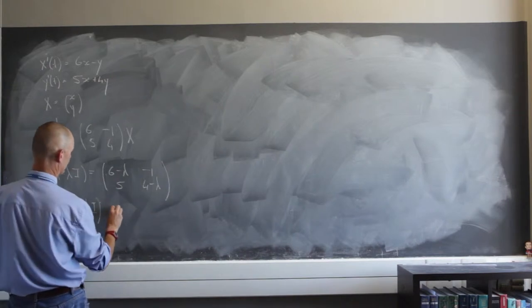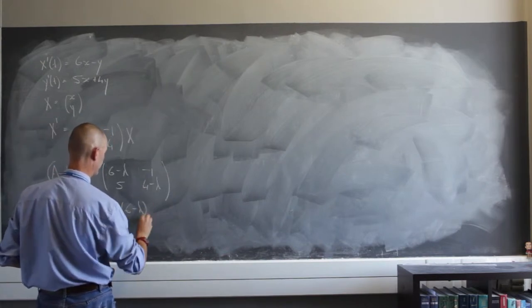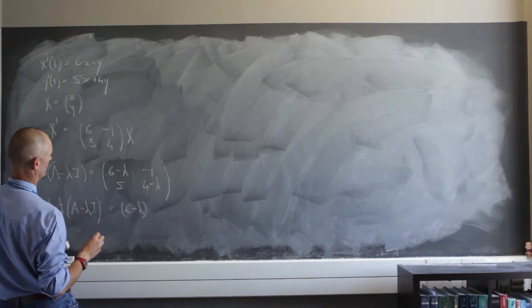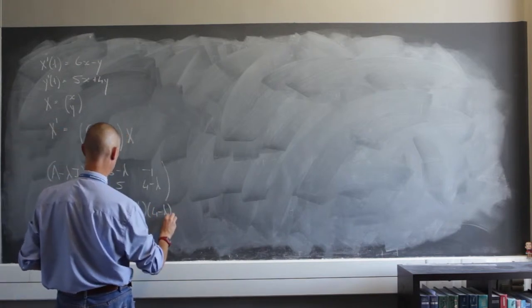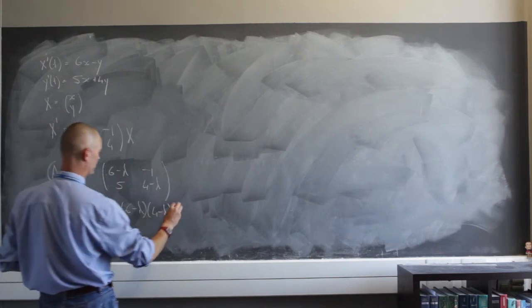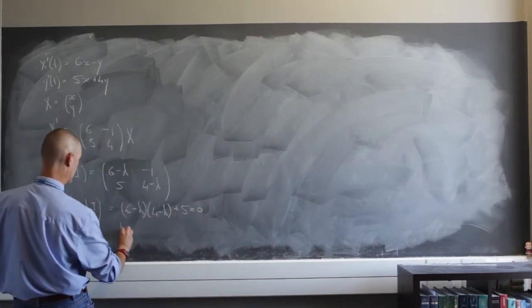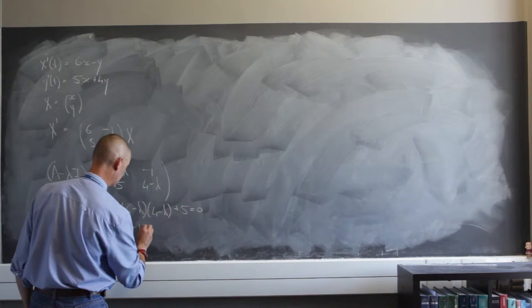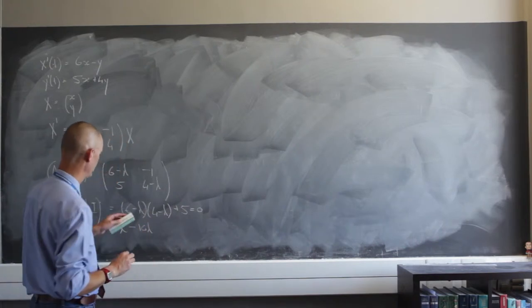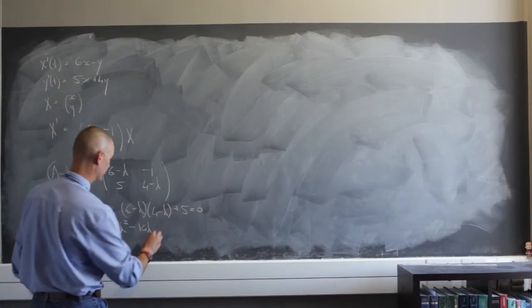And I've got to set that equal to 0. That's going to be 6 minus lambda times 4 minus lambda, minus negative 5, which is plus 5. And that's going to equal 0. So I'm going to have lambda squared, I'm going to have negative 4 lambda and negative 6 lambda, which is negative 10 lambda. And I'm going to have 6 times 4 is 24, plus 5 is 29.